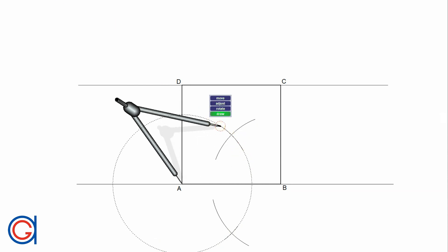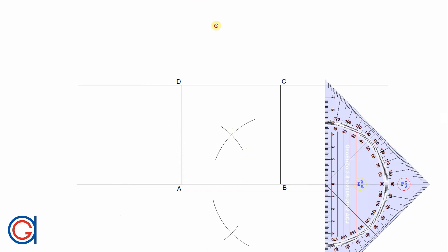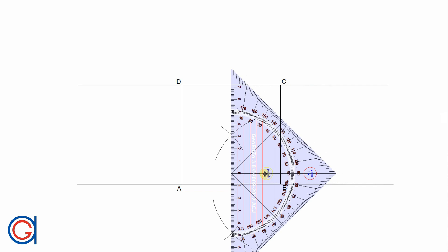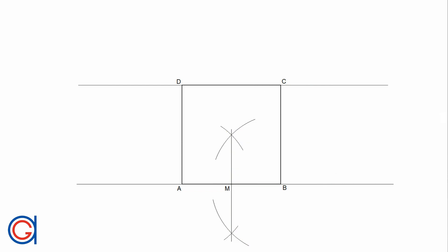Now with our set square, join the intersections of these two arcs. Where this line passes through line segment AB is the midpoint of AB, and we will call it M.